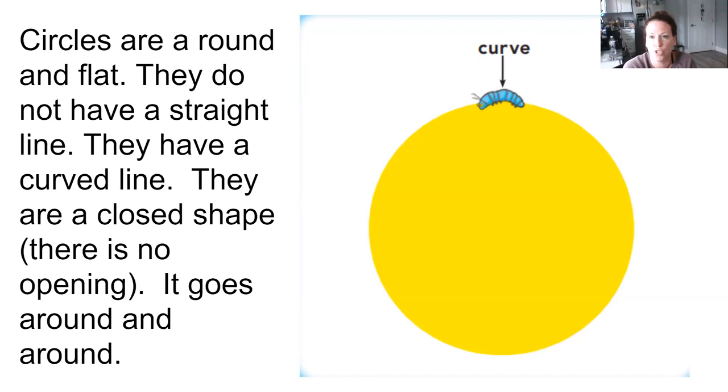You can keep going around and around that shape. If we do stop at the top, it is also a closed shape. There's no opening. When I draw a circle, I have to make sure that it is closed. That is not a circle. Do you see this opening here? Not a circle. Closed. So when I draw a circle, I have to make sure I close it.